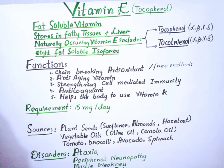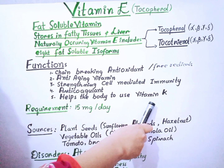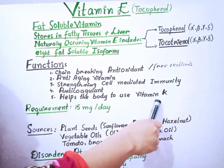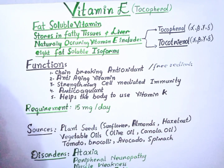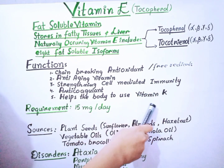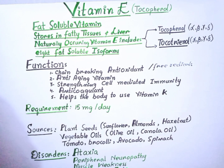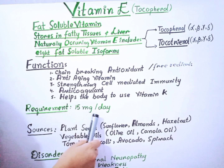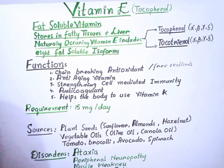Vitamin E also helps the body to use Vitamin K. Vitamin K is one of the most important vitamins; it makes various proteins essential for our body. One of the most important proteins for blood is prothrombin, which is formed with the help of Vitamin K.